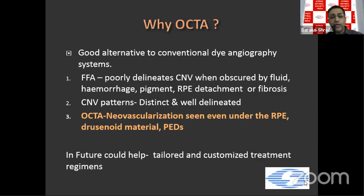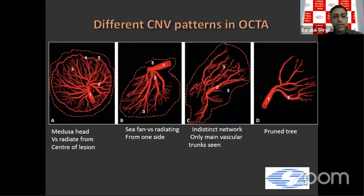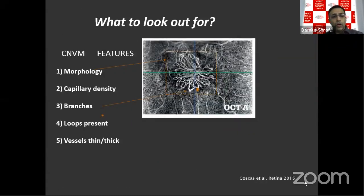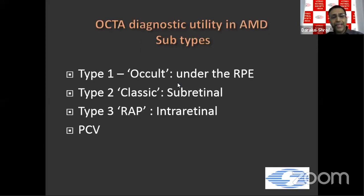With OCTA, CNVM patterns are distinct and neovascularization can be seen beautifully even under the RPE. In future, OCTA could help tailor and customize treatment regimens. Beautiful CNVM patterns have been identified on OCTA: the medusa head, the sea fan, the prune tree pattern, and the glomerulus — named after kidney glomeruli. When confronted with OCTA for CNVM, look at morphology, capillary density, branches, loops, and vessel thickness.